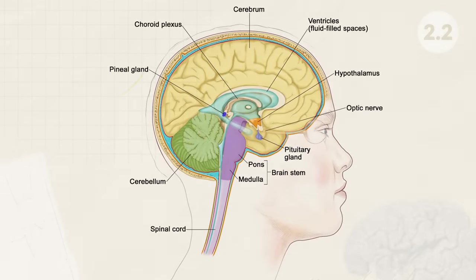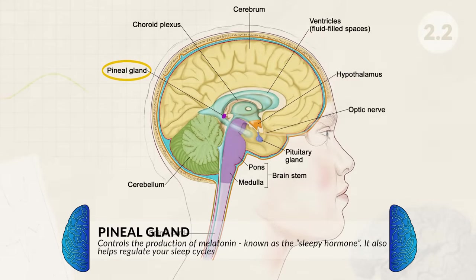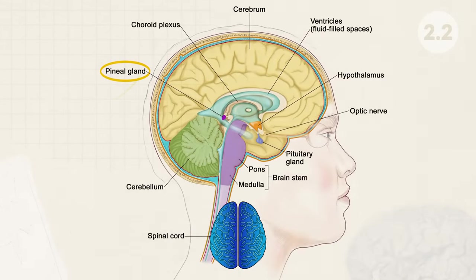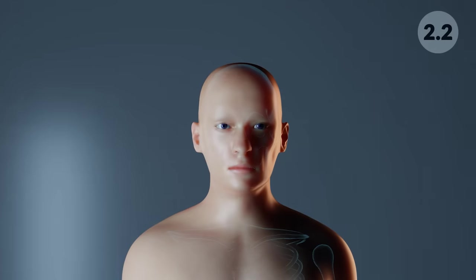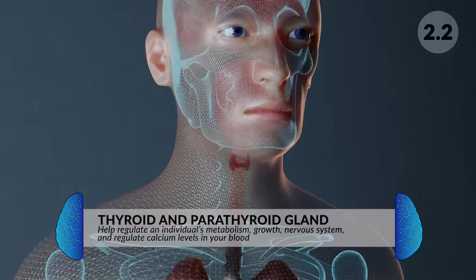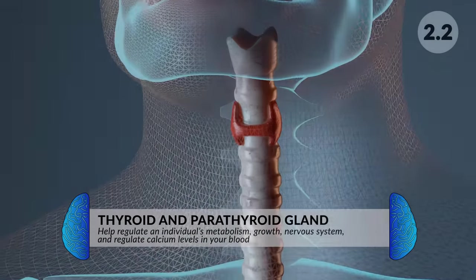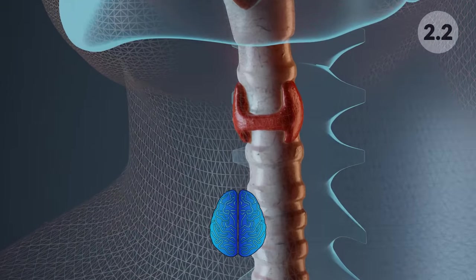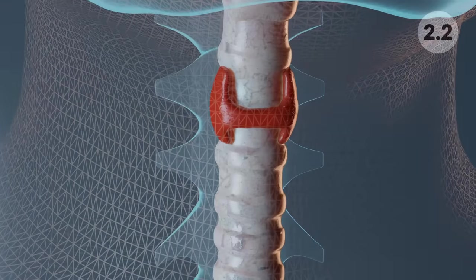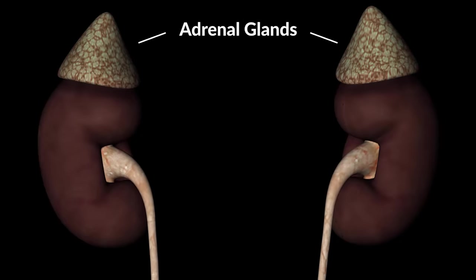Above the brain stem in the middle of the brain is the pineal gland, which helps regulate sleep cycles by producing melatonin, which helps you fall asleep at night. Moving down into the throat, we have the thyroid and parathyroid glands, which help regulate an individual's metabolism, growth, nervous system, and calcium levels in the blood. Hormones here include thyroid hormones, parathyroid hormones, and calcitonin, just to name a few.